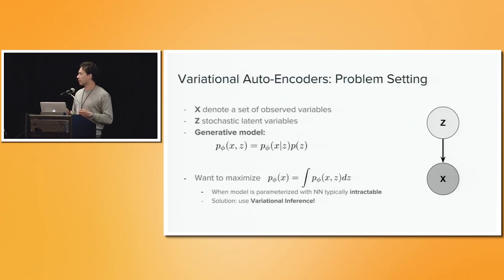If you look at the graphical model, you have x indicating our set of observed variables in high-dimensional space, and z our set of stochastic latent variables responsible for generating x. The generative model is then the joint distribution of x and z, which can be factorized as following, where the goal is to maximize the likelihood of our data.